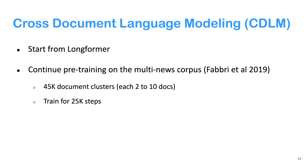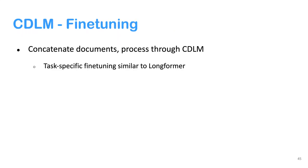For pre-training CDLM, we start from Longformer and continue pre-training on the Multi-News corpus — a multi-document summarization dataset from 2019 with about 45,000 document clusters of two to ten documents each. We train for 25,000 steps. This is a relatively small pre-training corpus, but you don't need large pre-training data if you do careful initialization. At fine-tuning, we concatenate documents and apply the same task-specific attention configurations as Longformer.